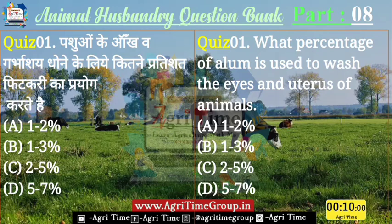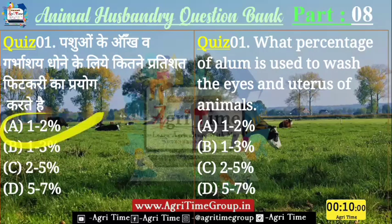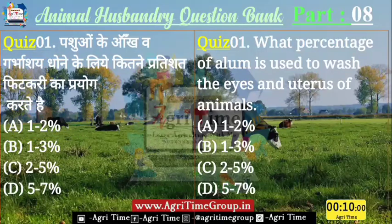Time up होता है, dear Agrarians। Quiz number 1 का जिन्होंने A answer comment किया है — यानि कि 1-2% — उन सभी का answer right है। ठीक है, चलिए बढ़ते हैं अगले question की ओर।